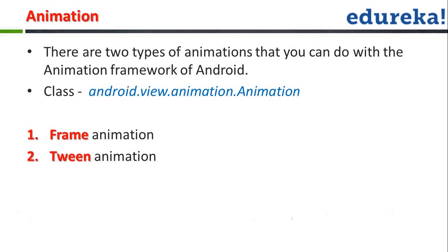One important thing to mention is that Android does not support GIF images — images that keep moving, like ones you see on Facebook where a man is just walking continuously. That kind of animated image format is not natively supported. To bring that concept into Android, we use frame animation: you have a sequence of images you want to make look like a video, put them in a frame, apply a frame animation, and it looks like a small video is playing on the screen.